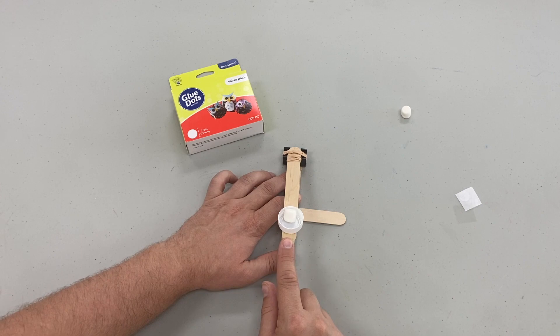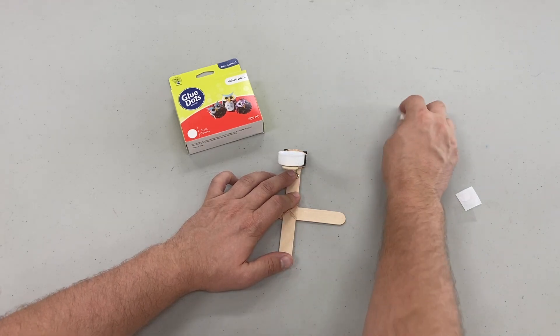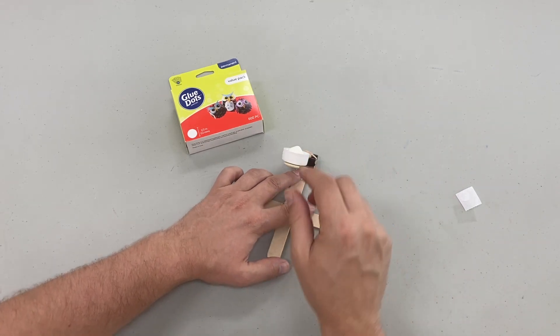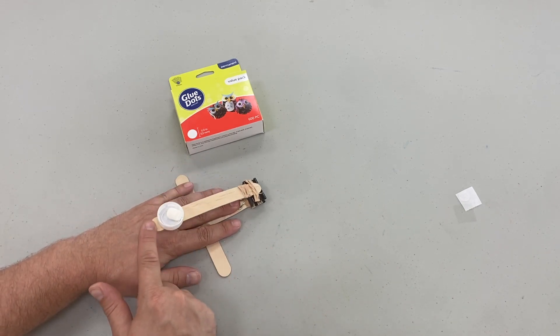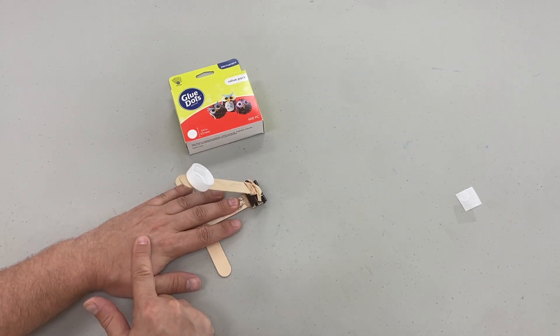We're now ready to fire. I love using mini marshmallows but you can use all sorts of projectiles. Go ahead and pull on back and make sure you're holding the base of your catapult. This thing, I'm telling you guys, it will launch super duper far, so be careful and use eye protection.